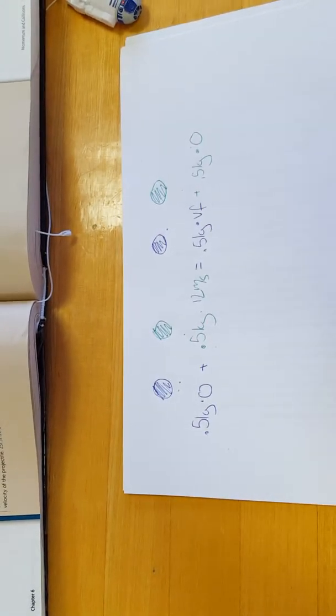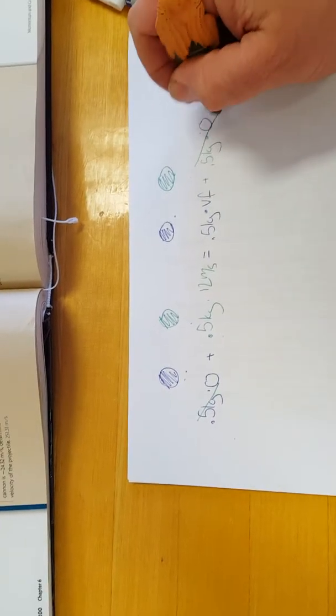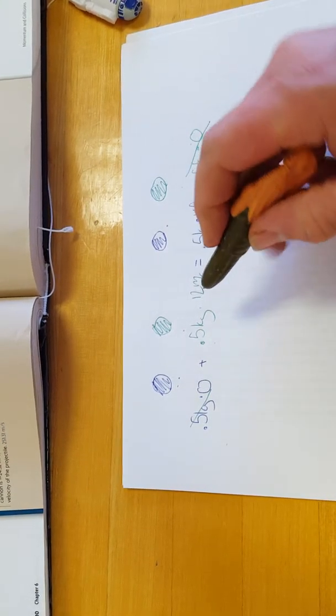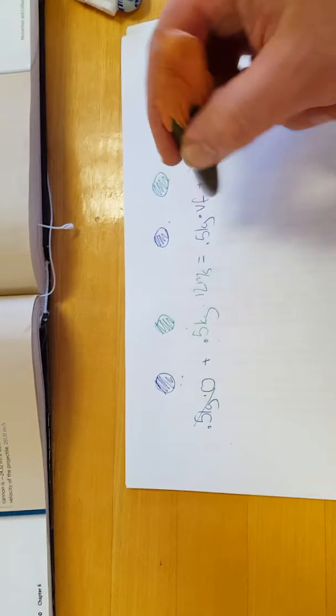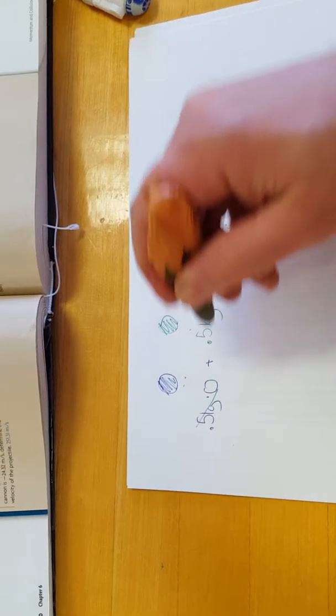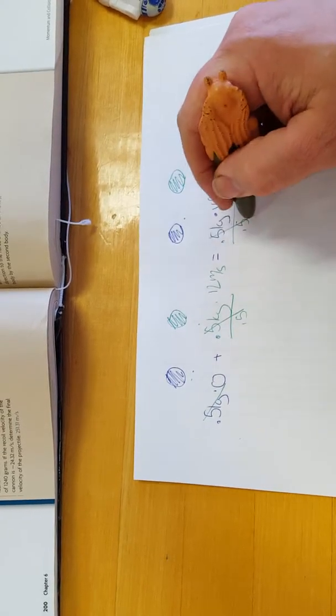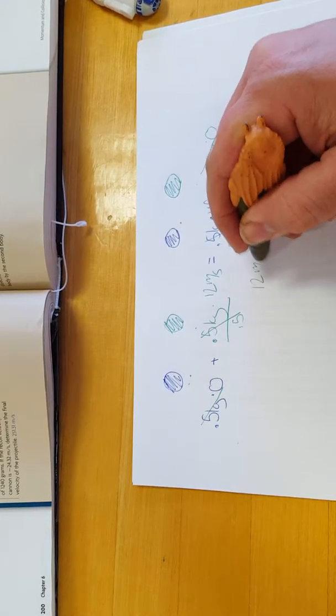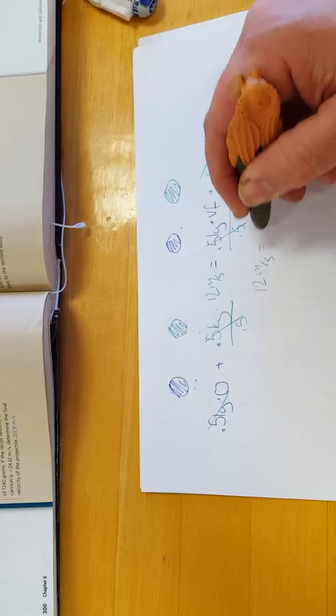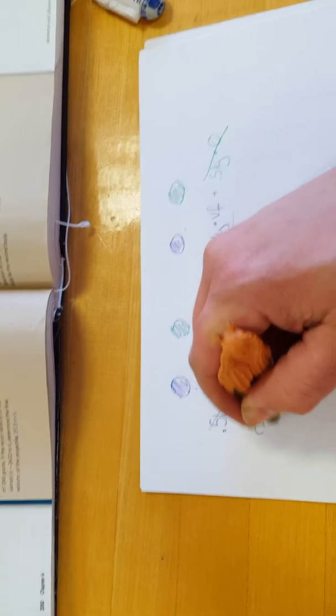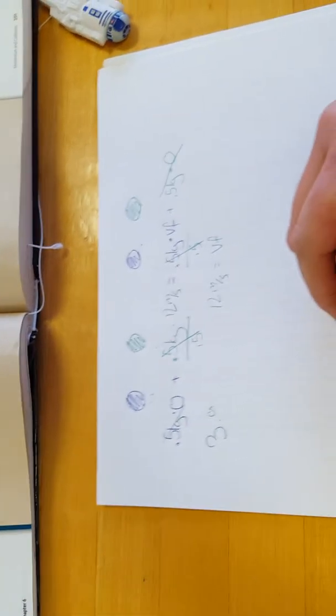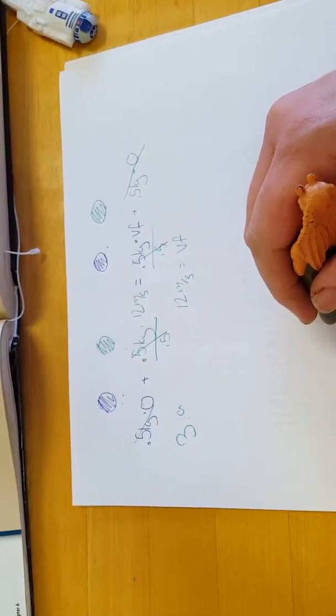So we can do ourselves a little bit of math here, 0.5 times 0. And you can see that 0.5 times 12 equals 0.5 times VF divided by 0.5. Divide by 0.5. So we can see that 12 meters per second is equal to V final for number three A that is. Then we can move on to three B.